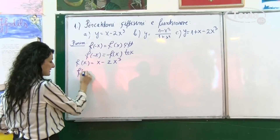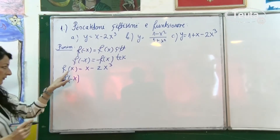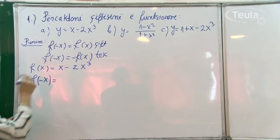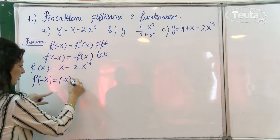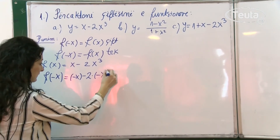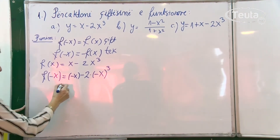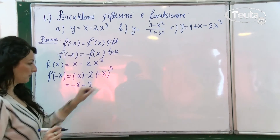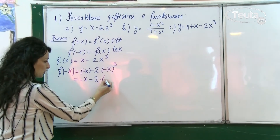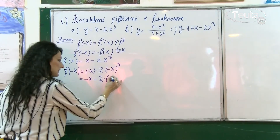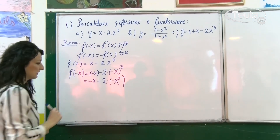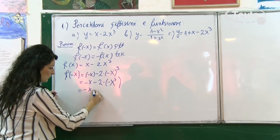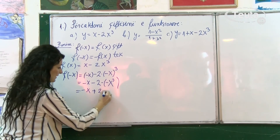Tani vazhdojmë dhe shohim si sillet funksioni jonë kur në vend të x-it marrim -x. Pra, në funksion kudo që kemi x do të zëvendësojmë me -x. Kemi f(-x) = (-x) - 2·(-x)³. Minus x, minus 2 herë, në vend të x-it zëvendësojmë -x dhe ngresim në të tretën. Atëherë: -x ngritur në të tretën kemi -2, dhe meqë e kemi në fuqinë e tretë, minusi mbetet. Kur x-it e ngresim në fuqinë e tretë kemi x³. Pra kemi -x - (-2x³) = -x + 2x³.